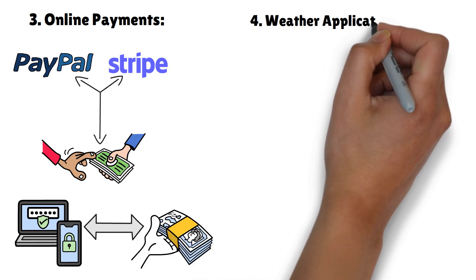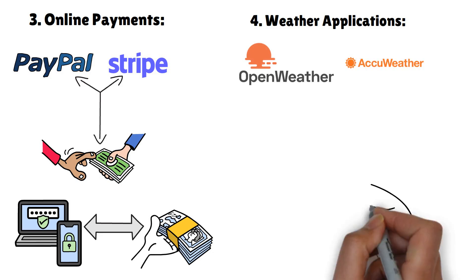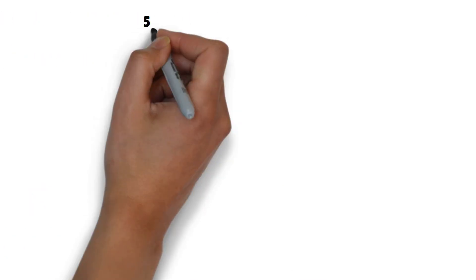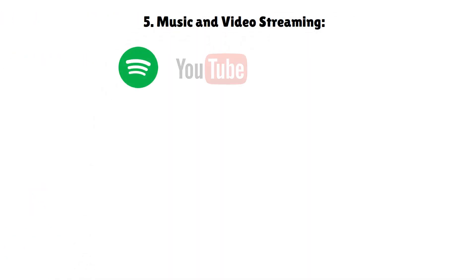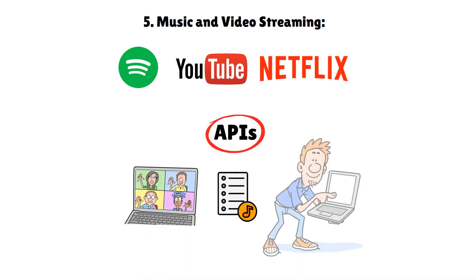Weather applications. APIs from providers like Open Weather Map fetch real-time forecasts for your apps. Music and video streaming. Spotify, YouTube, and Netflix use APIs to fetch and recommend content.